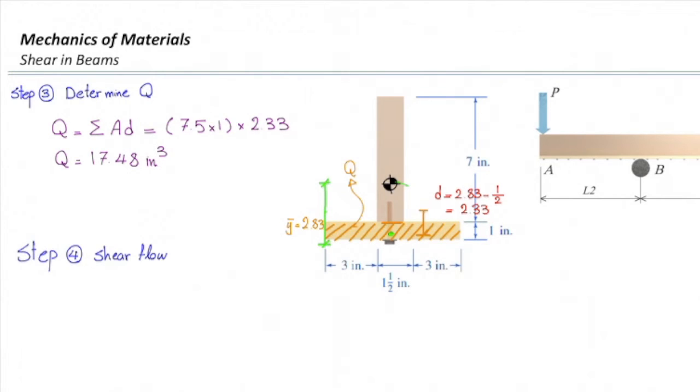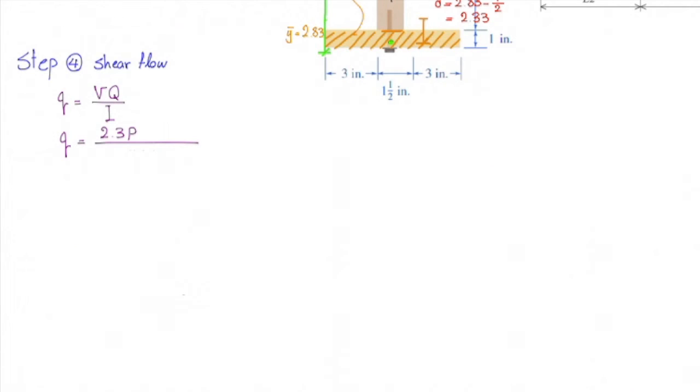In step number four we determine the shear flow. The shear flow is VQ over I. V is 1.3P, Q is 17.48, and I is 113.5, and that gives me a value of 0.2P.